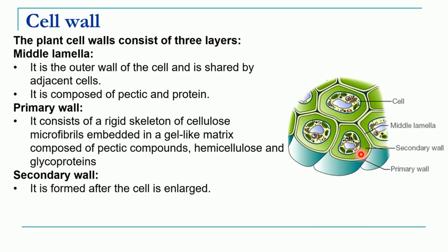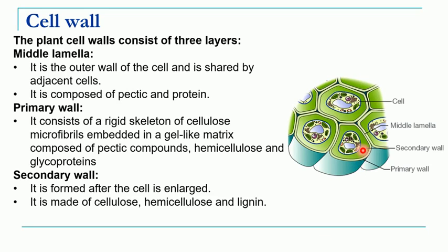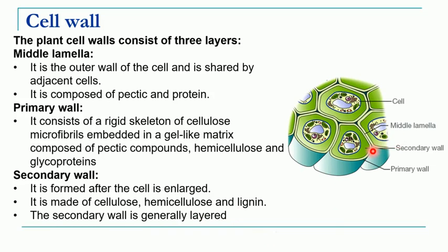The secondary cell wall is formed after the cell enlarges in size. This secondary cell wall is made up of cellulose, hemicellulose, and lignin. The secondary cell wall can also be layered. So, you have the outermost primary cell wall, then the secondary cell wall, and between two adjacent cells you have the presence of the middle lamella.